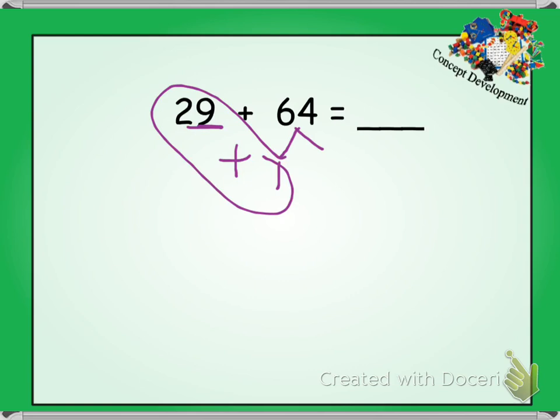Well, I know that 64, if I take one away from 64, I know 63 is left. Now I'm going to add my one and 29 together. 29 plus one is 30.